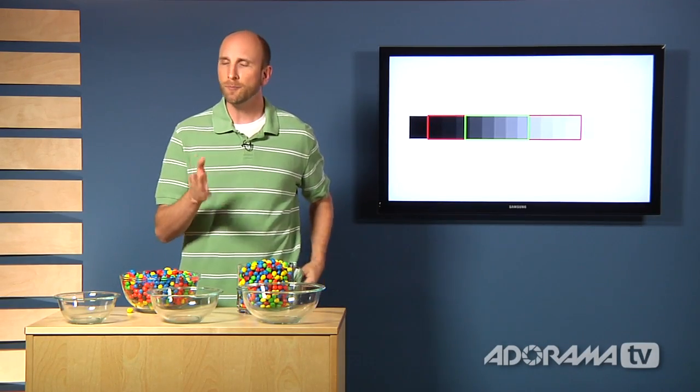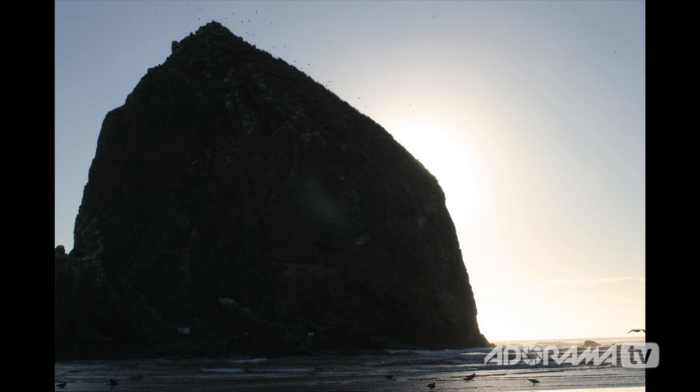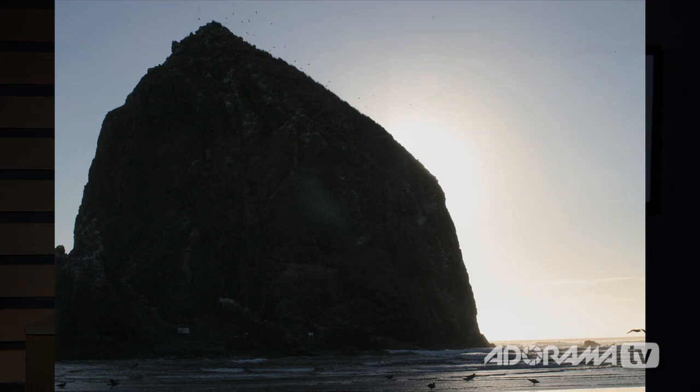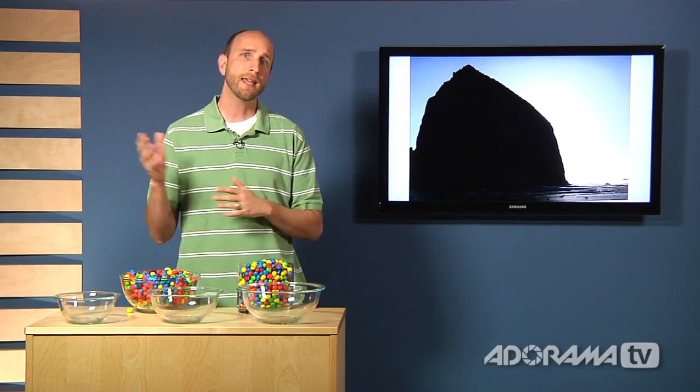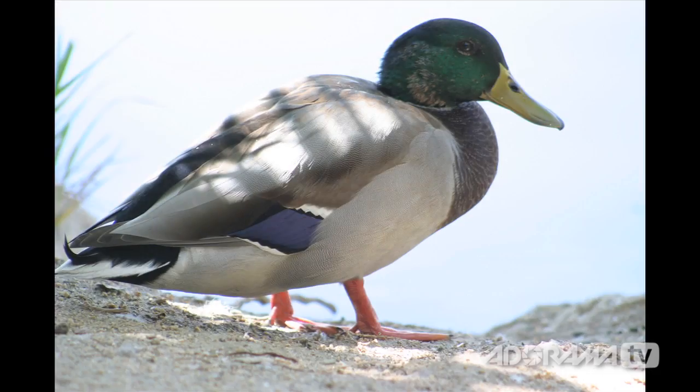To better understand dynamic range, let's take a closer look at a couple of images. Here's an image that I shot at Cannon Beach in Oregon. It's of Haystack Rock. This image has a lot of issues. We can see that Haystack Rock is very underexposed, and the sky is overexposed. The camera's dynamic range was too small to capture both the dark areas in the scene and the bright areas of the scene. What I got was an image that wasn't really pleasing.